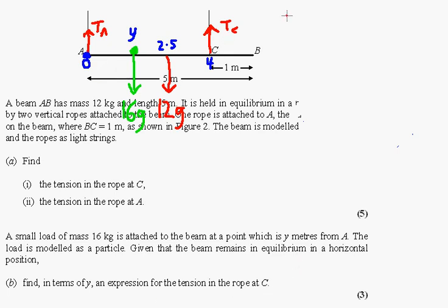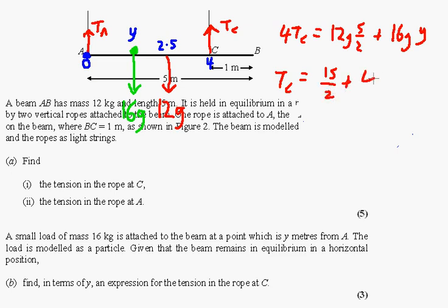We're now going to find an expression for the tension in the rope at C again. So again, take turning forces from zero, we end up with this one's that way, this one's that way, and this one is that way, if you fix it at zero. So we get 4TC must equal 12G times 2.5, add 16G times Y, and so TC must equal our old mate, what was it, 15 over 2 plus 4YG. That says 15 over 2 plus 4YG. That's in terms of Y then.